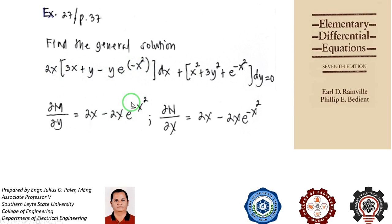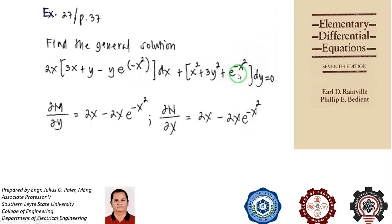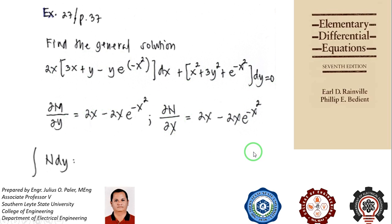Now for our N term, we differentiate with respect to x, treating y as constant. The derivative of x squared is 2x, the derivative of 3y squared is zero, and the derivative of e to the negative x squared is negative 2x e to the negative x squared. As you can see, the partial derivative of M with respect to y equals the partial derivative of N with respect to x, so this is an exact differential equation and we will now proceed with our solution.